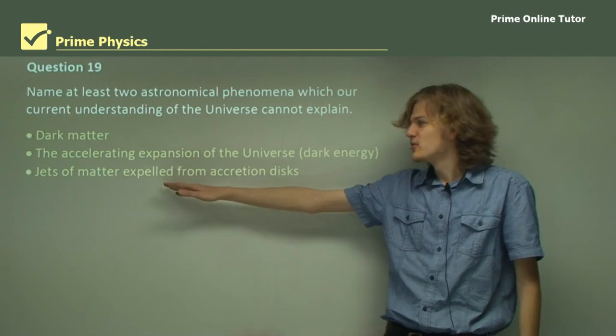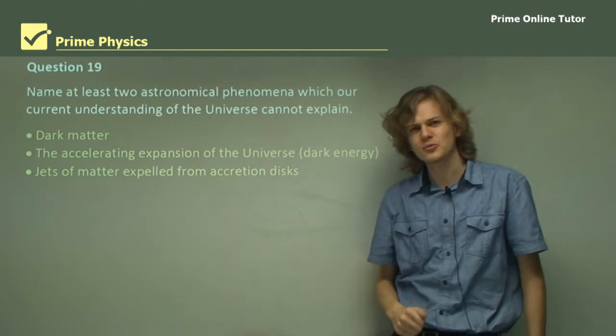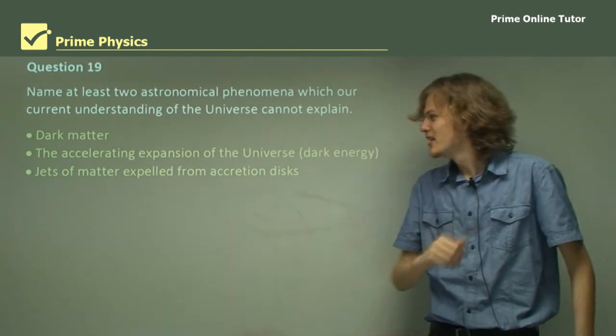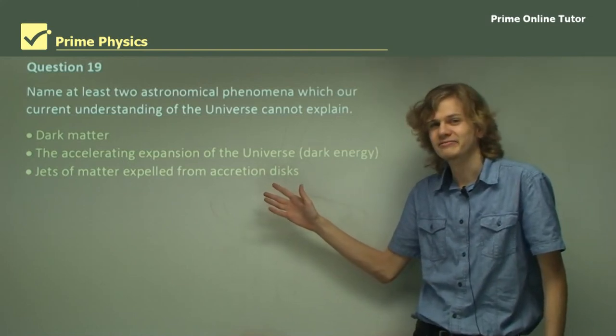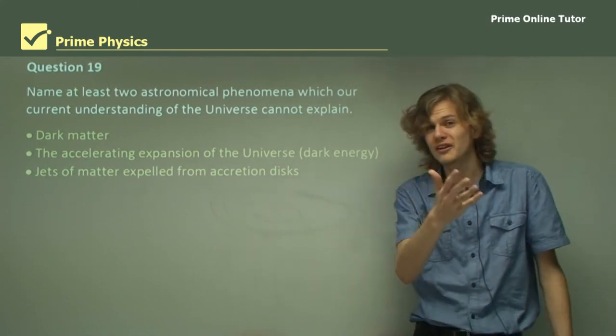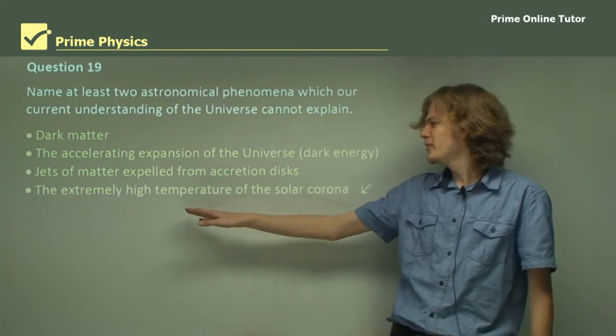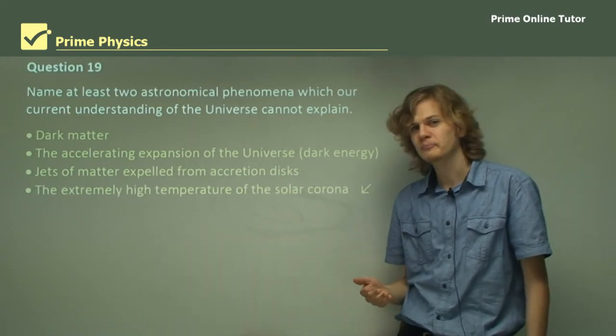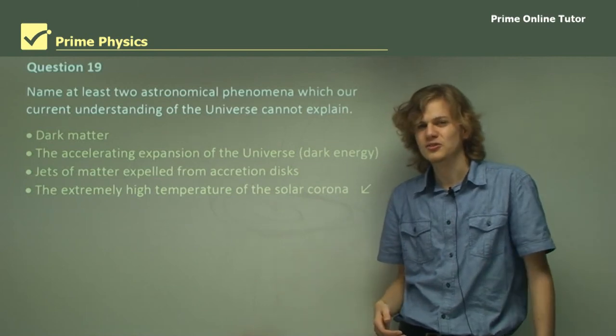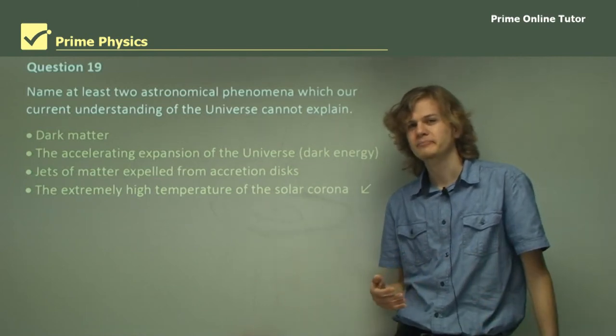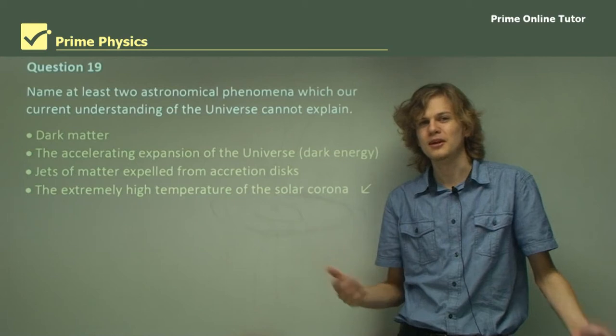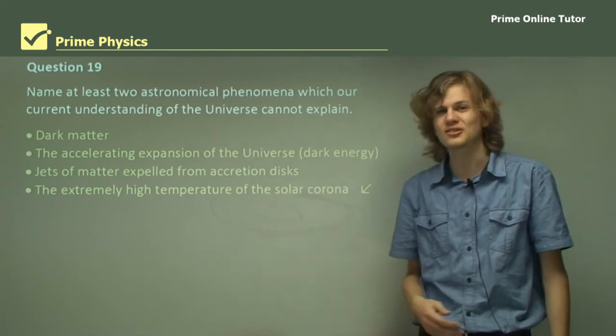Another one is jets of matter expelled from accretion disks, which I drew a lovely diagram of. We don't know why it does that. But we know it's interesting. We know we want to find out. And one more, the extremely high temperature of the solar corona. We don't know why it gets hotter than the surface of the sun. There's certainly some unexplained mechanism out there that allows it to do that.